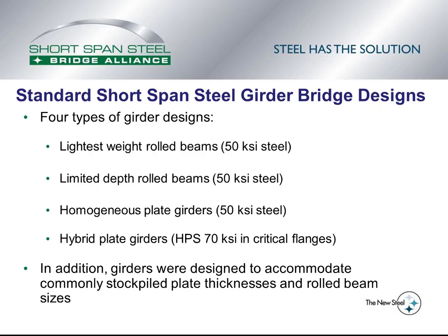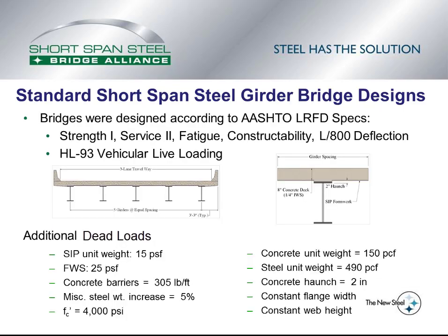There are four types of girder designs in eSpan 140. The lightest weight rolled beams represent the minimum amount of material for a rolled beam bridge. Because of approach work or clearance requirements, owners may also consider limited depth rolled beams. For plate girders, both homogeneous and hybrid plate girders are included. The girders were designed to accommodate commonly stockpiled plate thicknesses and rolled beam sizes for economy. The bridges in eSpan 140 were designed according to current AASHTO LRFD specifications, including Strength 1, Service 2, fatigue, constructability, and deflection limits.